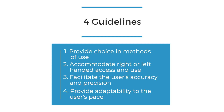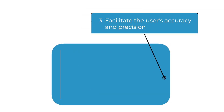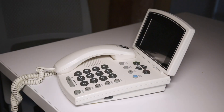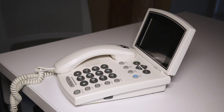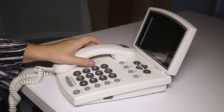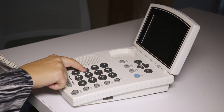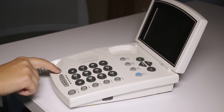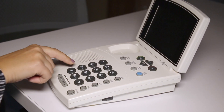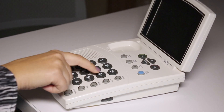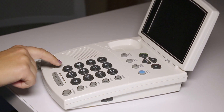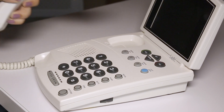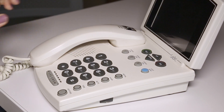Third, facilitate the user's accuracy and precision. An example of this guideline is a telephone with large numbers to accommodate users with vision-related disabilities, dexterity issues, or just hurrying through the process. Having the large keys ensures that the user can be accurate and precise in using the product.